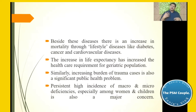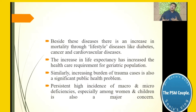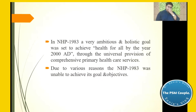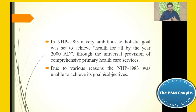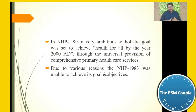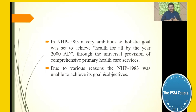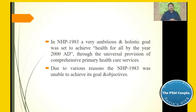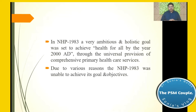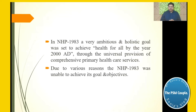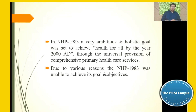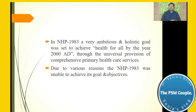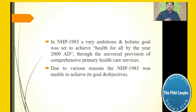In the National Health Policy 1983, a very ambitious and holistic goal was set — to achieve health for all by the year 2000 through the universal provision of comprehensive primary health care services. However, due to various reasons, NHP 1983 was unable to achieve its goals and objectives.